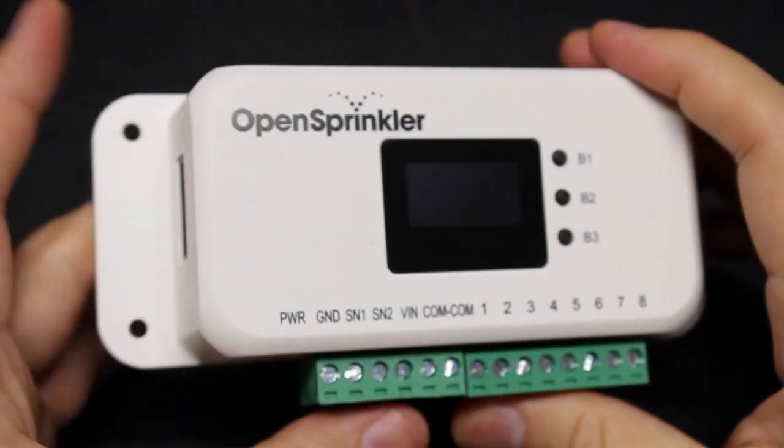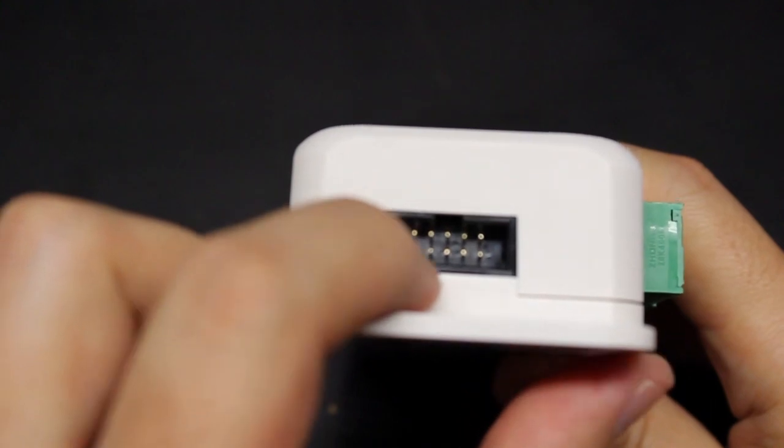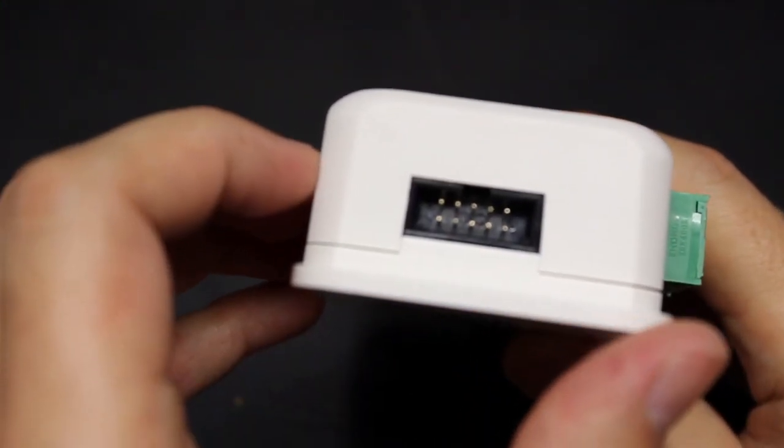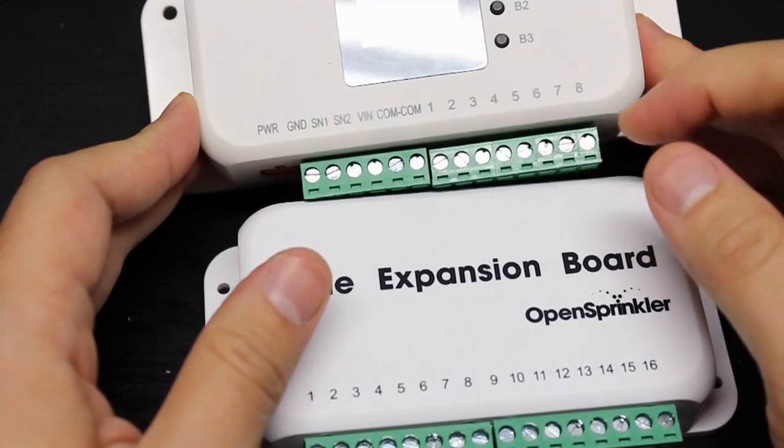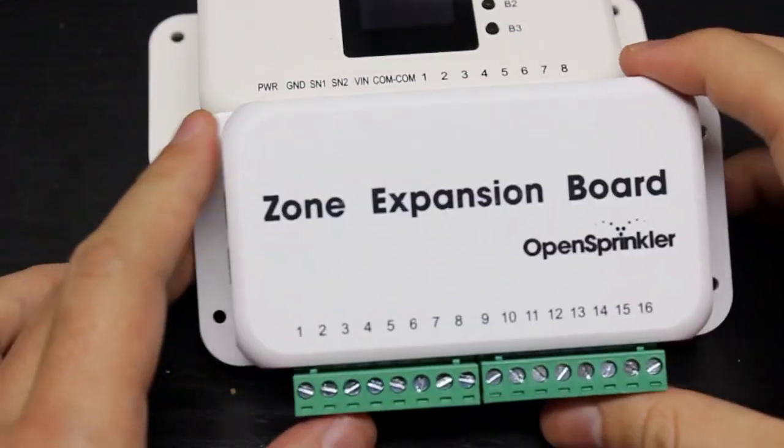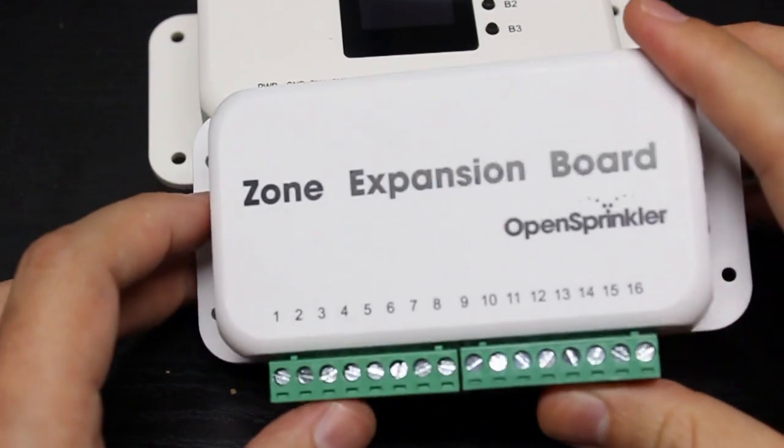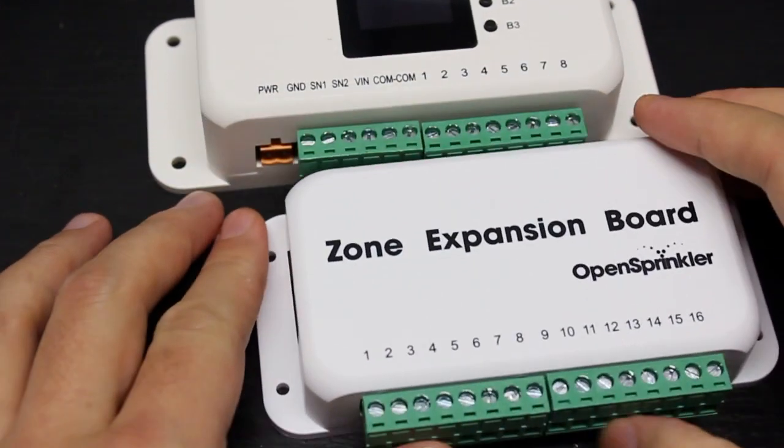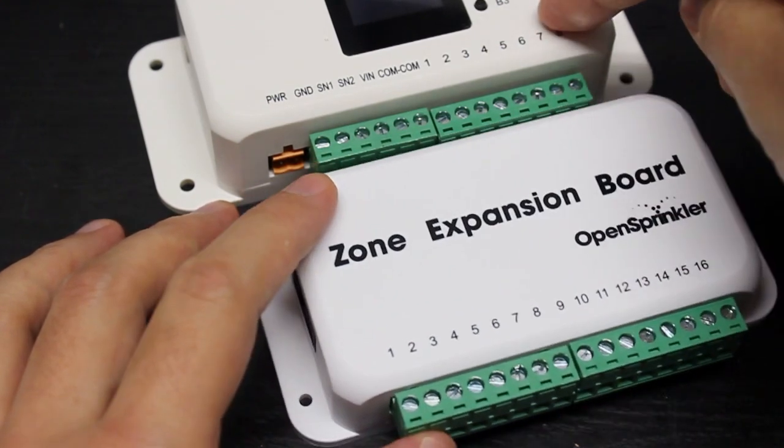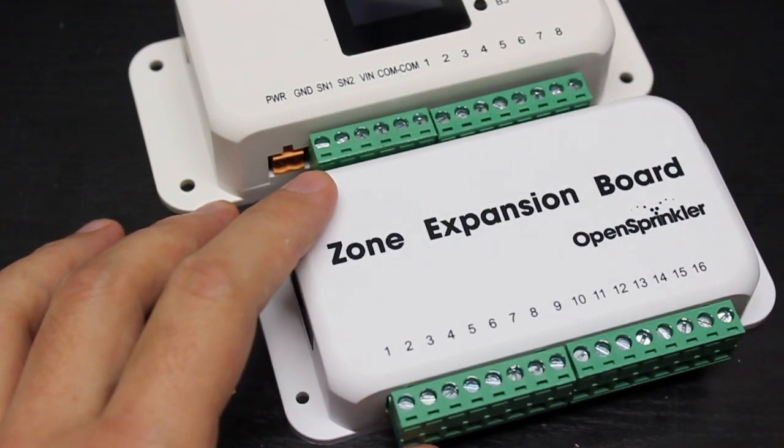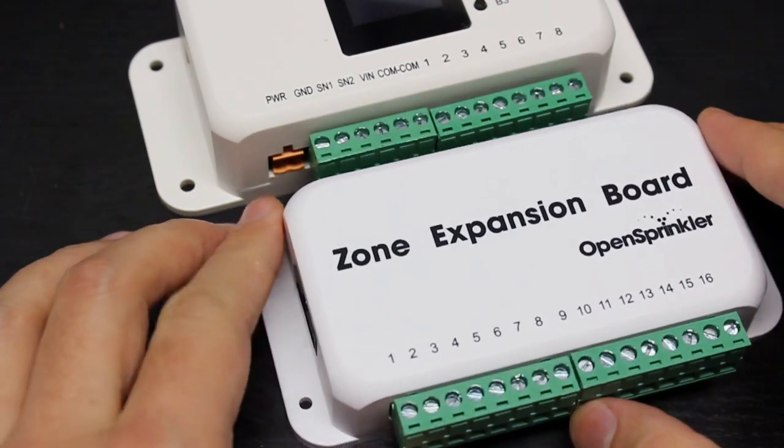Next, on the left side of the controller is a 2x5 pin connector. This is the expander connector. If you want to expand the number of zones beyond 8, you can purchase expanders. Each expander adds another 16 zones. At the moment, you can chain up to 4 expanders. So including the main controller and the 4 expanders, you can have up to 72 zones in total.